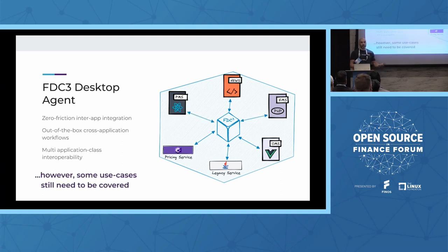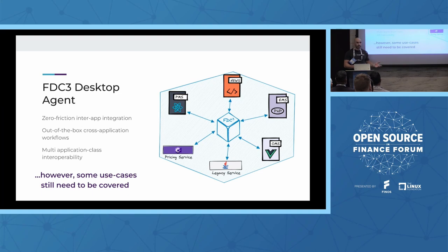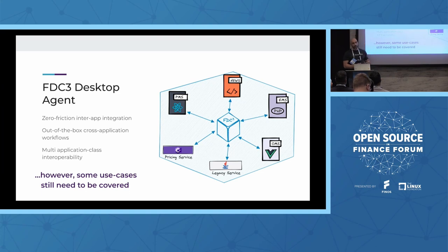The desktop agent was born and provided zero-friction inter-app integration, offering out-of-the-box cross-application integration. Now we have workflows with context links and intent-based actions, streamlining and connecting multi-class applications together. The desktop agent changed the way we are developing software for the financial services industry. We love this — the rising tide lifts all boats, and we are really committed to FDC3. An attestation to that commitment is that we shifted away from our proprietary interop API and are constantly at the forefront of the standard.